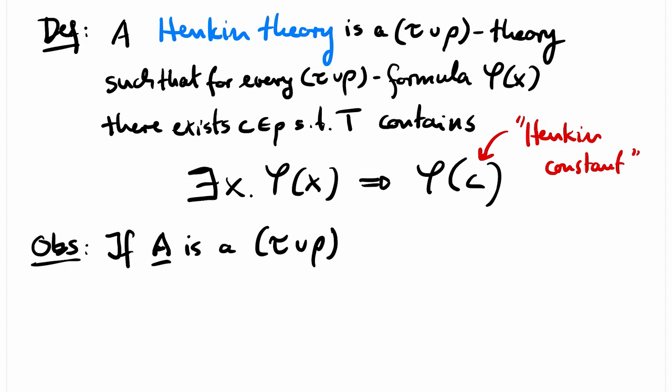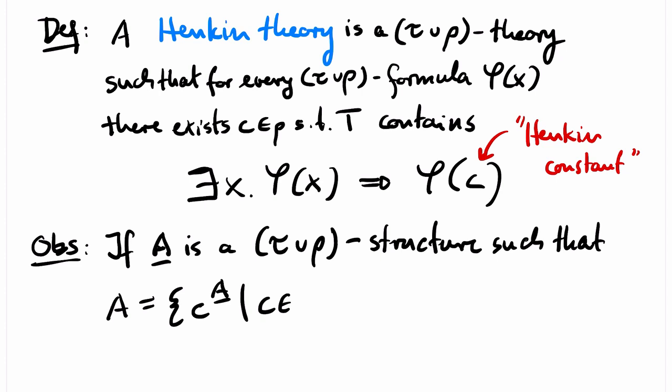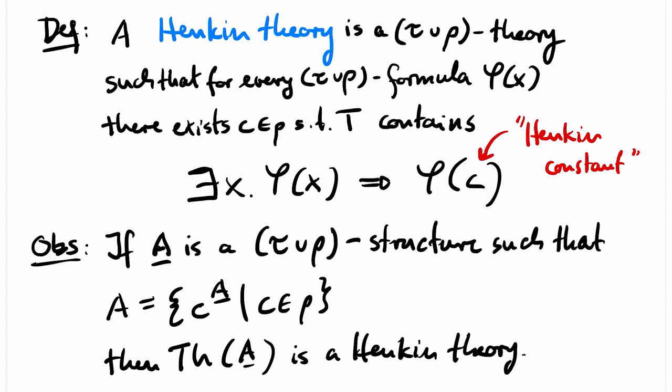Where do Henkin theories come from? If A is a τ∪ρ-structure such that every element of A is denoted by some constant from ρ, then the theory of A is a Henkin theory. This is because if ∃x φ(x) is true in A, there must be some element of A that satisfies φ, and there must also be a constant c in ρ that denotes this element, and hence we have φ(c). So the theory of A contains all the sentences that we need for Henkin theories.